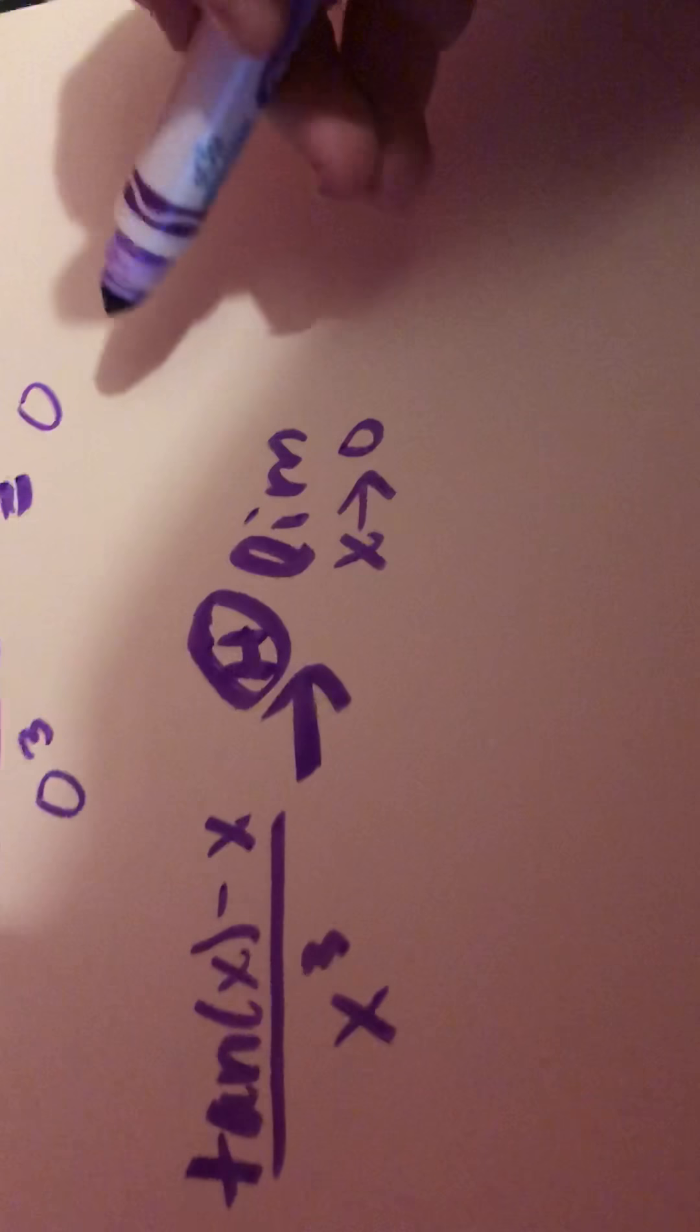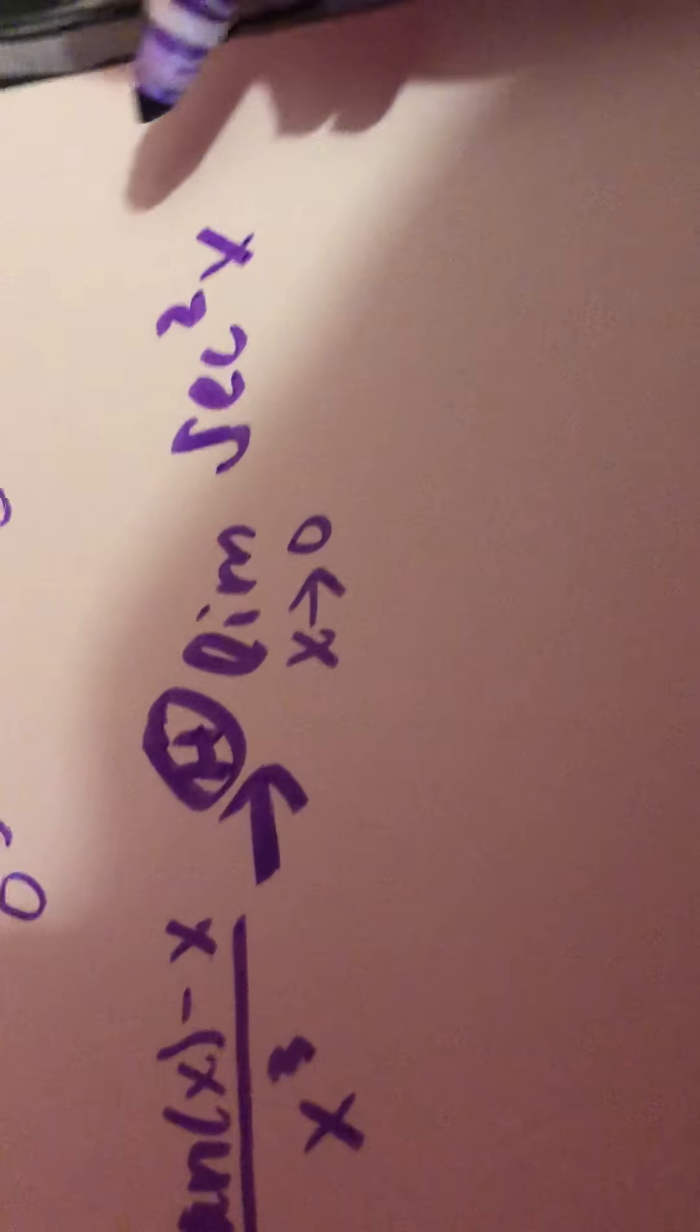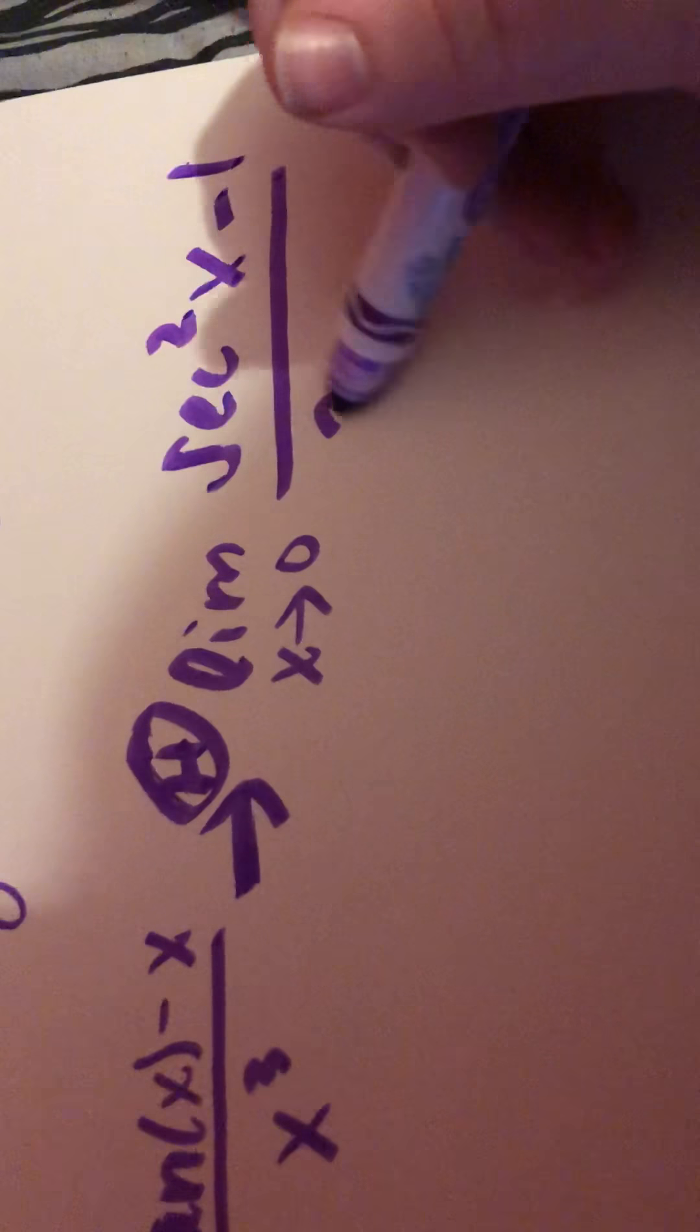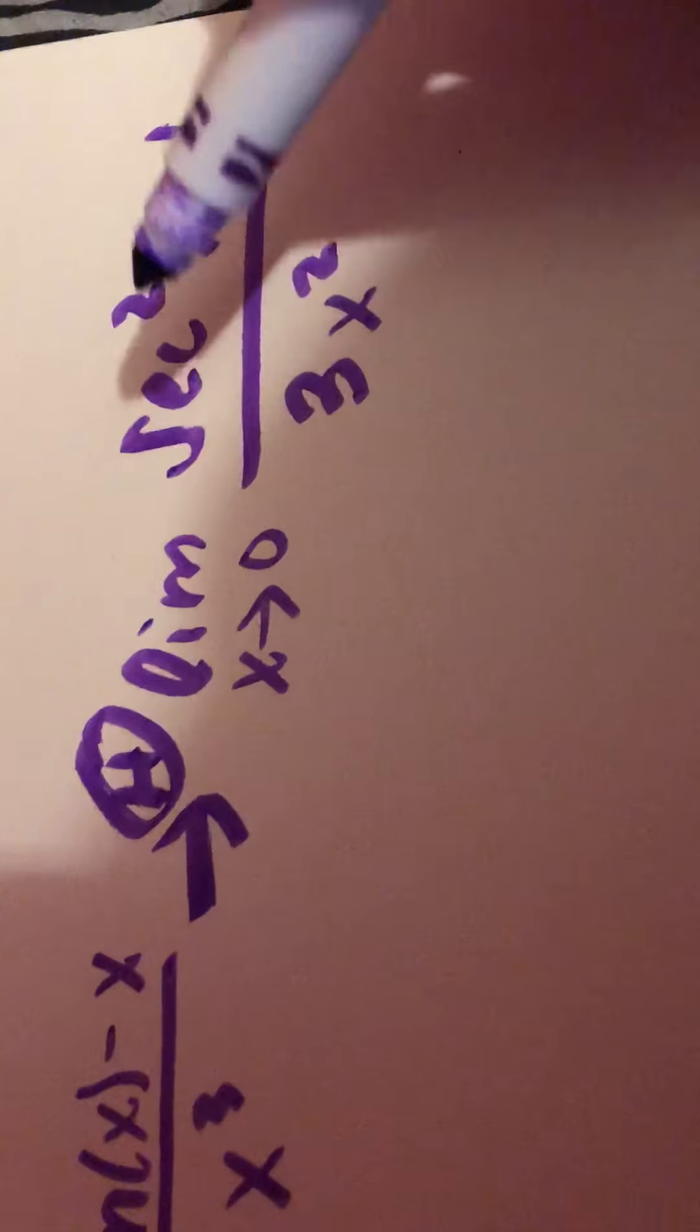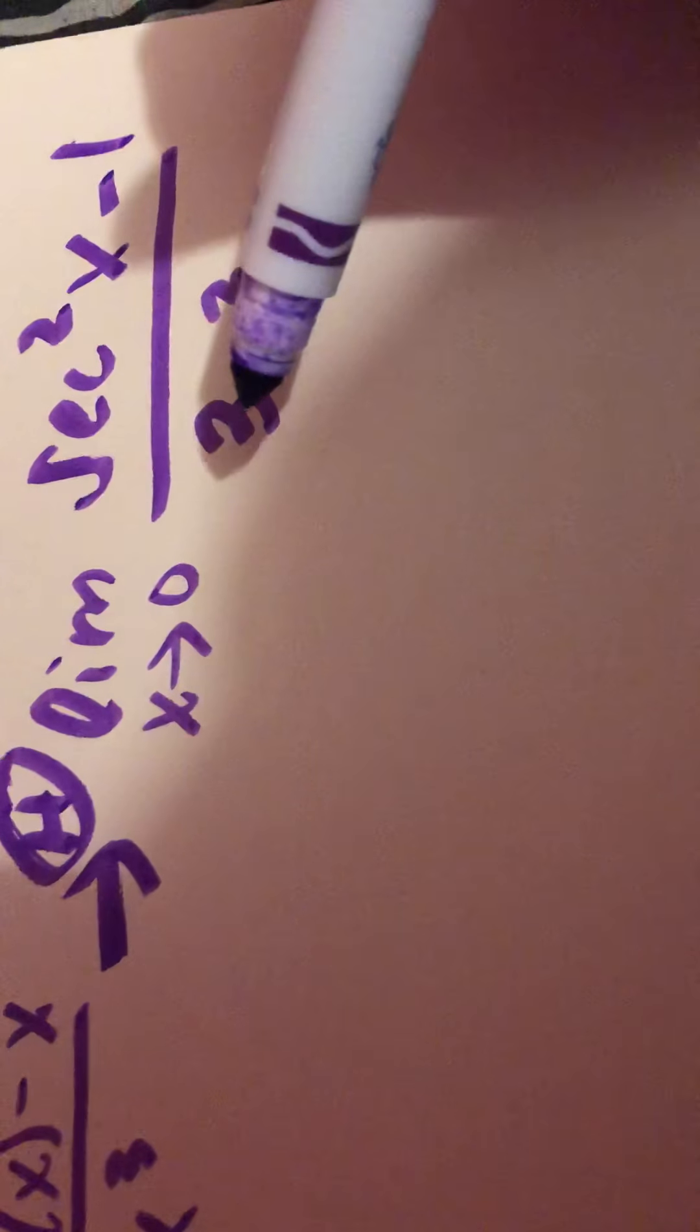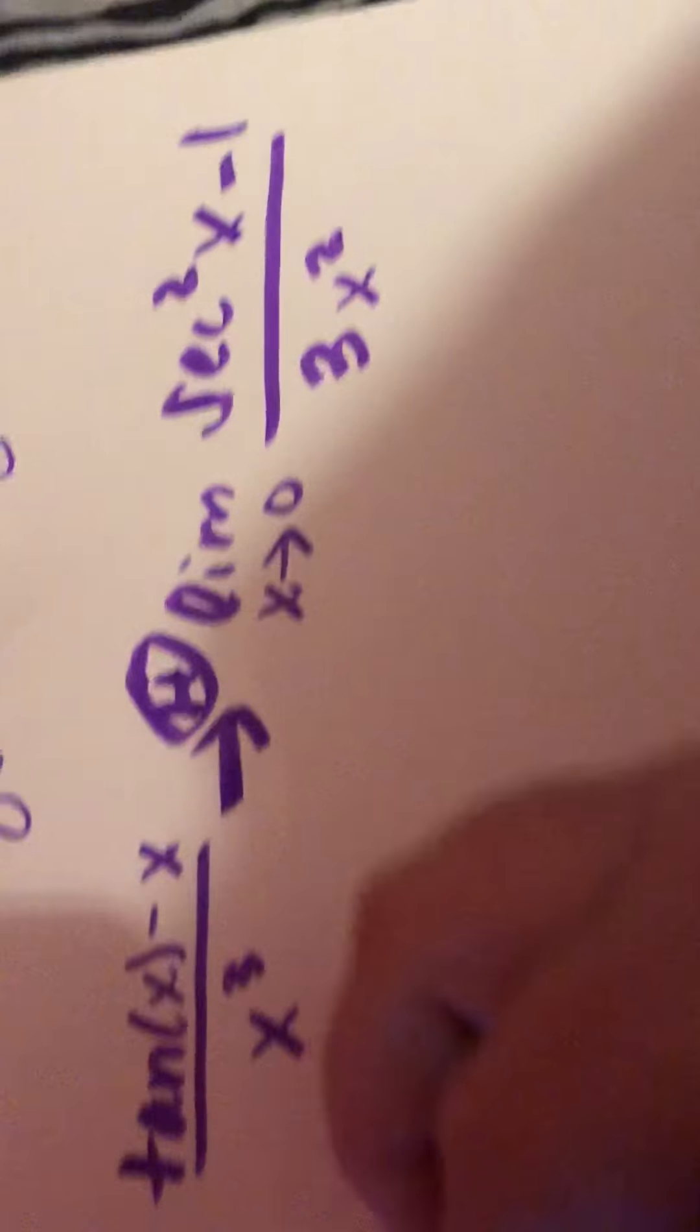give us secant squared of x minus 1 over 3x squared. Now when we plug this in again, secant squared of 0 minus 1 equals 0, 3 times 0 squared also equals zero. So we need to use the rule again.